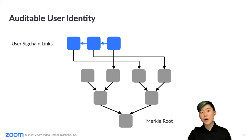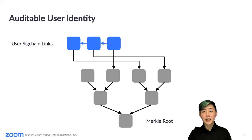Consider the basic attack where an attacker somehow adds a device to Alice's identity — this can happen if the attacker guesses Alice's password or compromises the Zoom server. The attacker can now join a meeting with Alice's identity. But the SIG chain and transparency tree ensure the attacker can't cover their tracks and erase the device they added without being detected. When Alice comes back online, she can review any changes made to her identity and notice this new device. Our Zoom transparency tree is similar to Certificate Transparency and Keybase, but Zoom identities are not completely public and we handle mutable user identifiers.